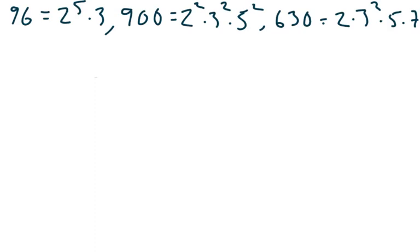So 96, which factors as 2 to the 5th times 3, 900, which is 2 squared times 3 squared times 5 squared, and 630, which is 2 times 3 squared times 5 times 7.